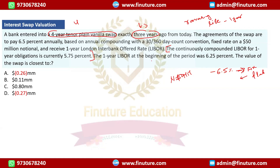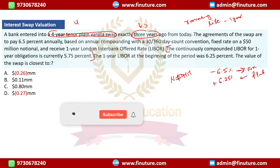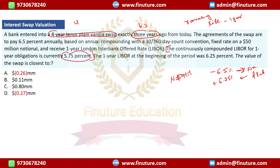The one-year LIBOR at the beginning of this period when the reset was done was 6.25%, so you are receiving 6.25% and paying 6.5%. The discount rate is 5.75%. To summarize: notional is $50 million, you are paying 6.5%, receiving 6.25%, and the one-year annual discounting rate is 5.75%. These are the four key inputs, and you are asked to find the value of the swap.